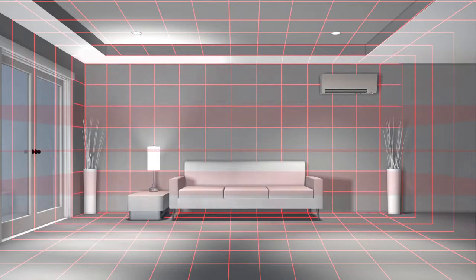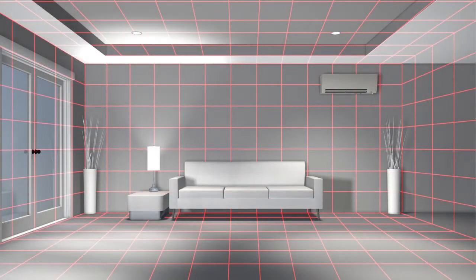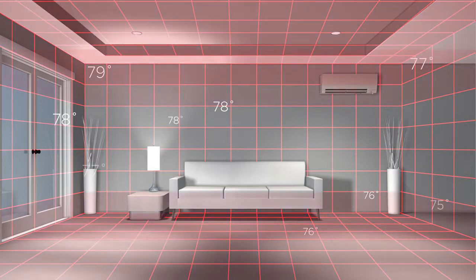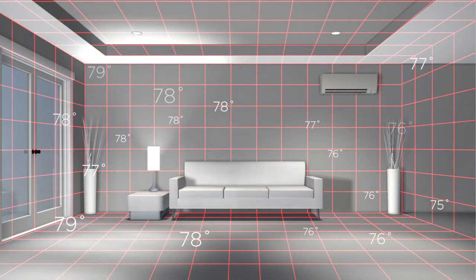To achieve this, the 3D IC Sensor divides the space into 752 three-dimensional zones, measuring the temperature in each to detect the exact position of heat signatures.